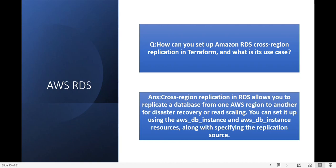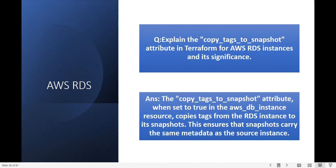Next question: explain the copy_tags_to_snapshot attribute in Terraform for AWS RDS instances. When the copy_tags_to_snapshot attribute is set to true in the AWS DB instance resource, it copies the tags from the RDS instance to your snapshot. This ensures that the snapshot carries the same metadata as the source instance.